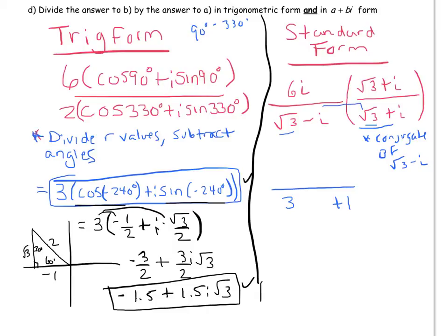But when you do the inner product, negative i root 3, and the outer, positive i root 3, and you add those, you get 0. So it's just 3 plus 1 at the bottom. And in the top, we can just distribute.